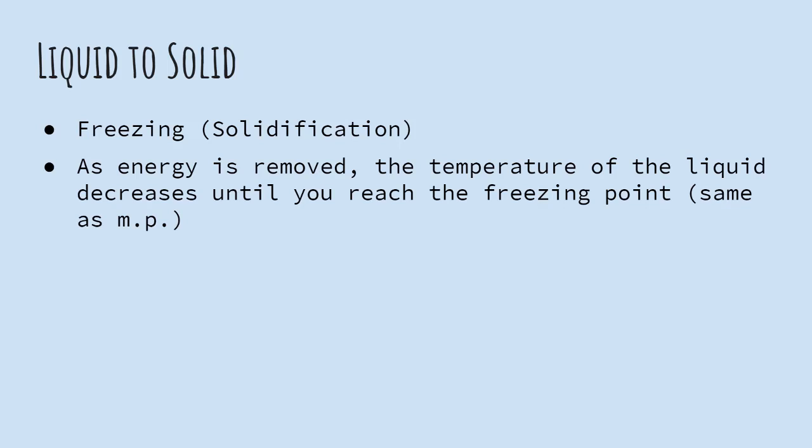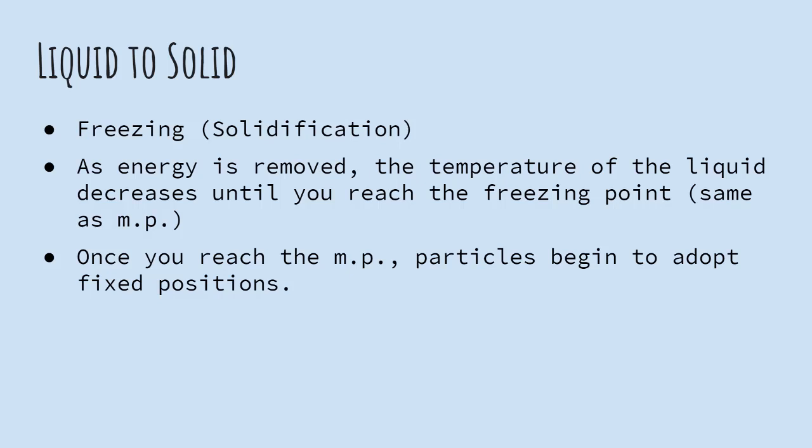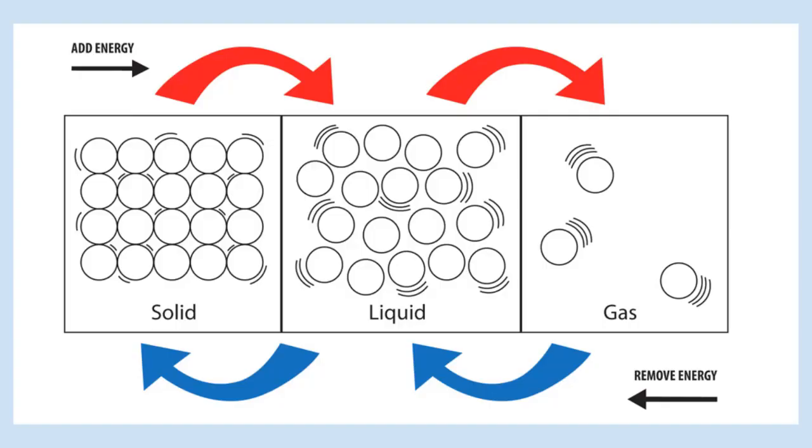Now the opposite change, liquid to solid, we know is freezing, but its official name is solidification. As you take energy away, you cool it down, the temperature of the liquid is going to decrease, the particles are going to be moving more slowly, until you reach what's called the freezing point. Now the freezing point is the same temperature as the melting point. It's the exact same point. It's just one you're going up in temperature and the other one you're coming down. When you reach there, the particles start to adopt their fixed positions. They stop moving in space and they start to just stay still and vibrate. The temperature again will not change until all the particles are fixed and then it'll start to drop again.